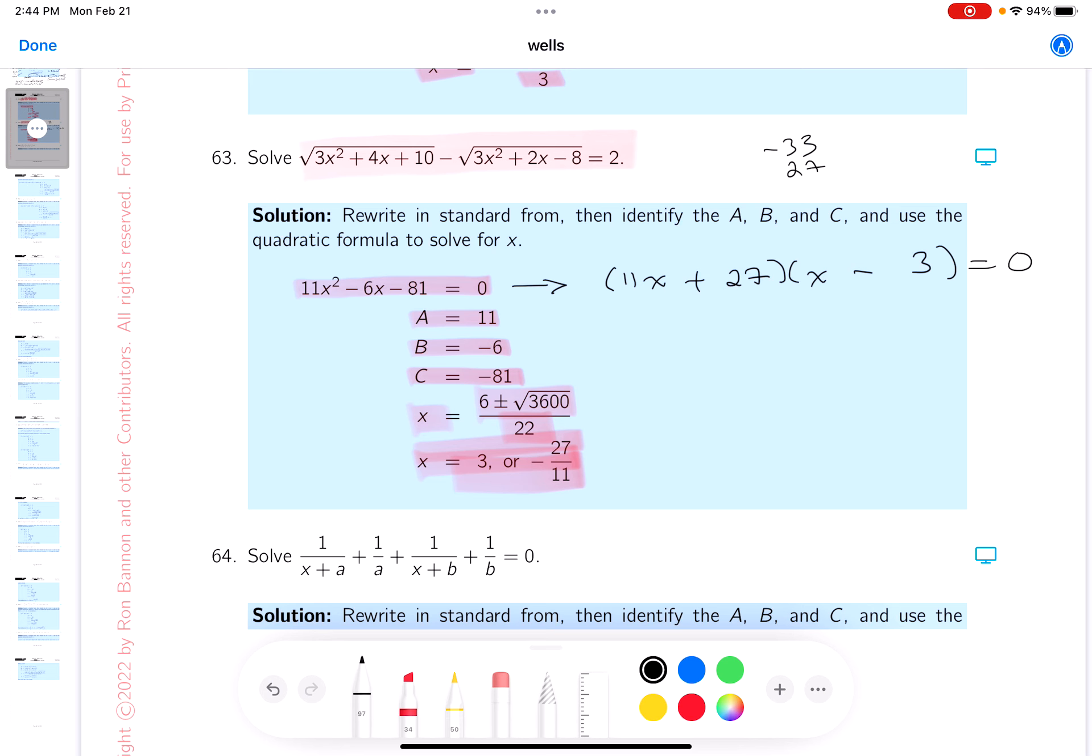And 27, and that would give you minus 6 - works beautifully. So what do you get over here by factoring? x equals minus 27/11, or x is equal to 3. All right, thank you.